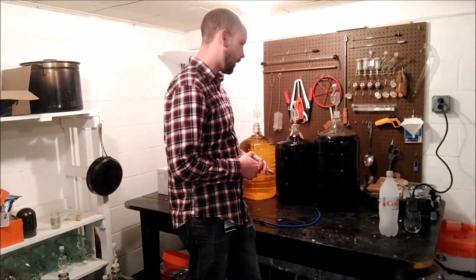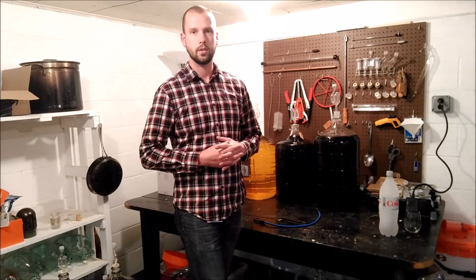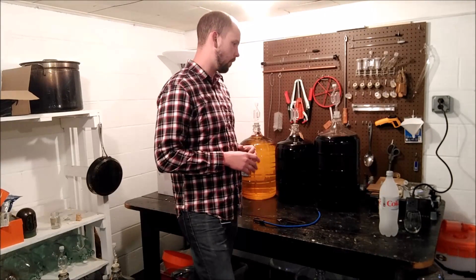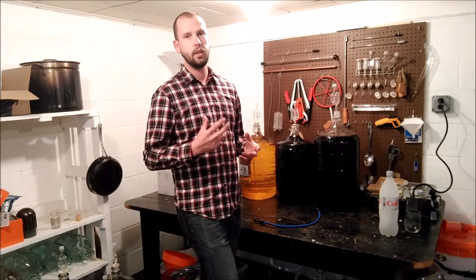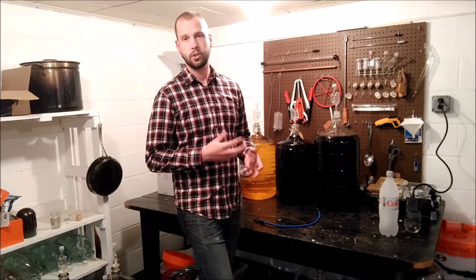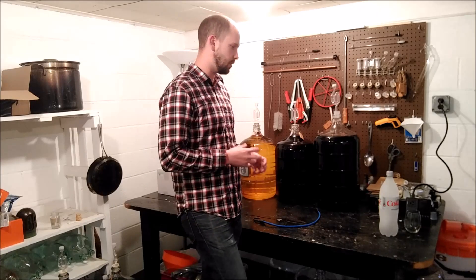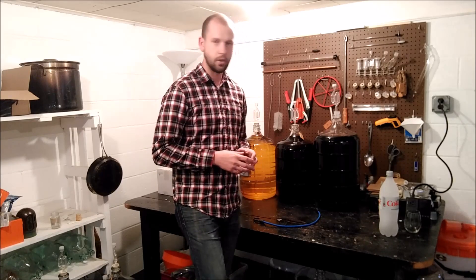I'll start with red wines. Usually with a red wine you'd ferment on the actual grape skins to extract the color, and you want to extract some tannin from those seeds and skins to get the traditional red wine characteristics that you'd want.